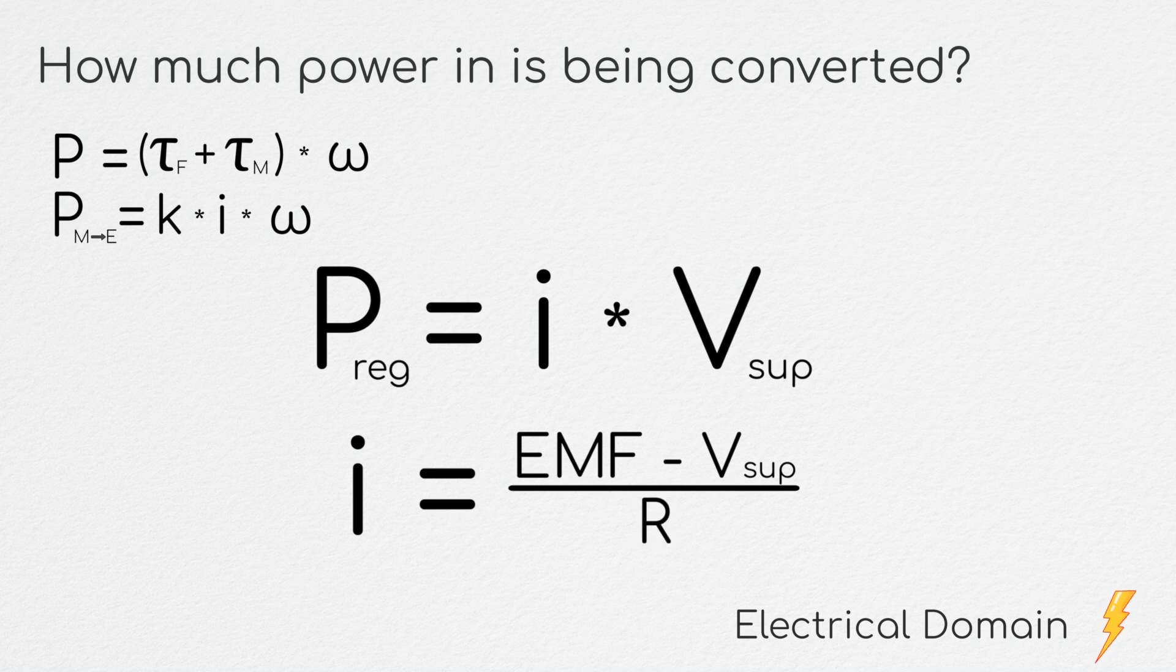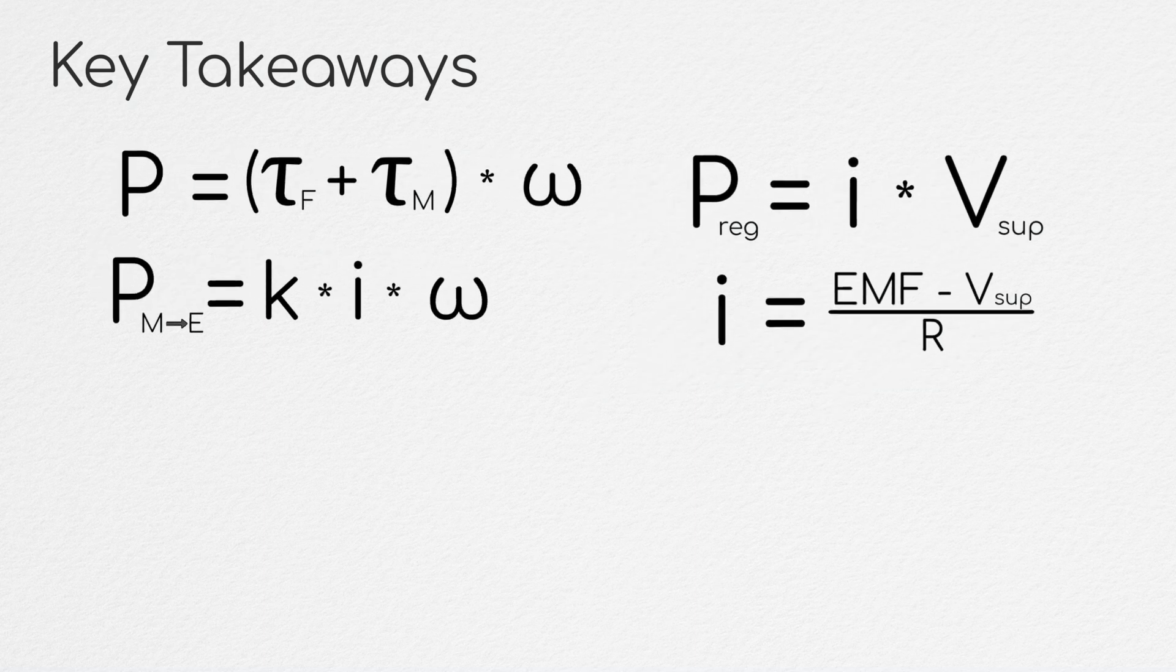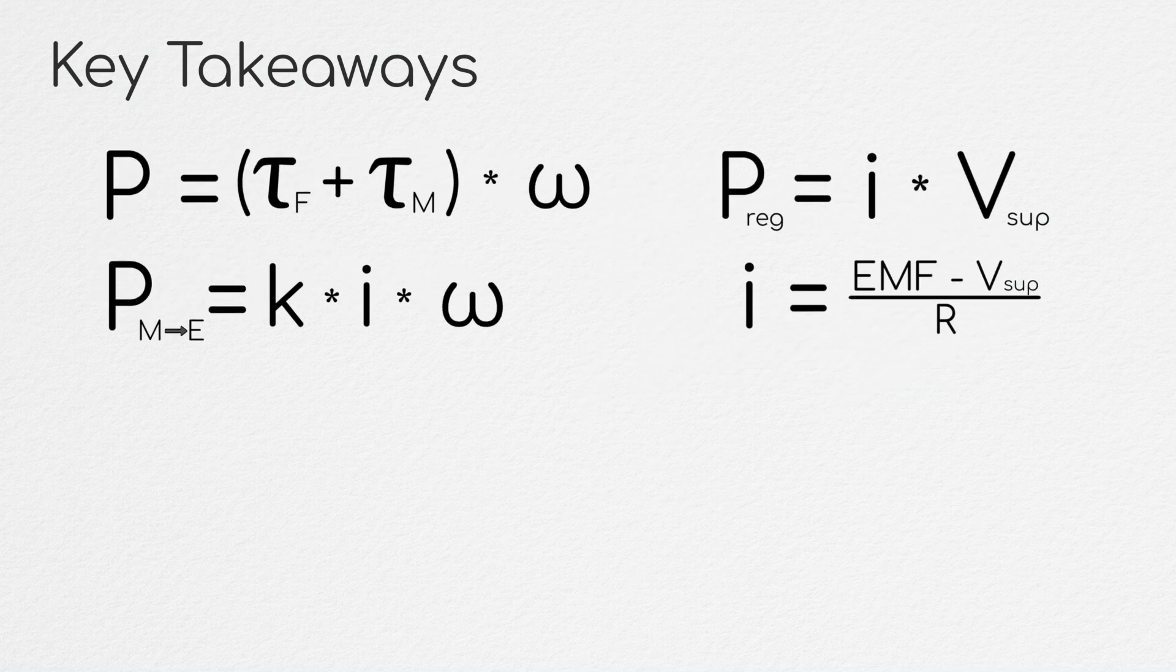So now our power out of the motor into our supply would be equal to our supply voltage times the difference between the back EMF and the supply voltage, all divided by the resistance of the system. There's a couple of key ideas that I want you to take away from this analysis.